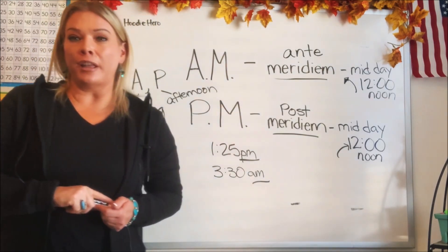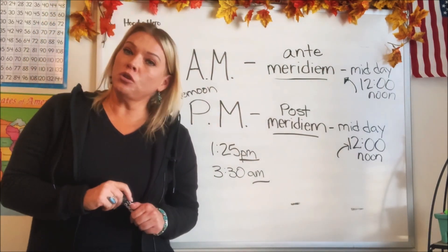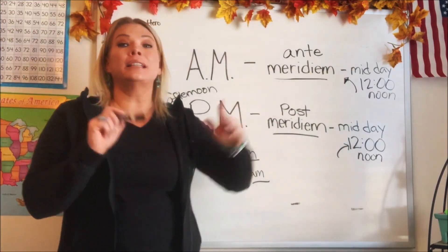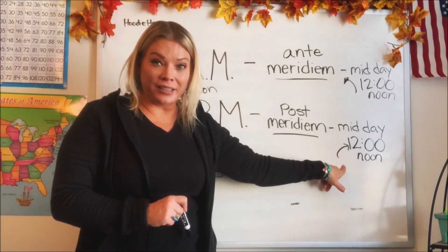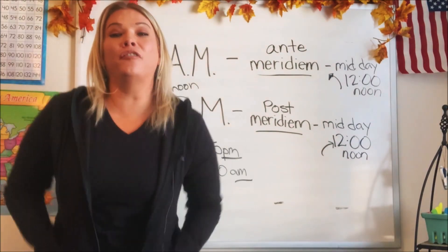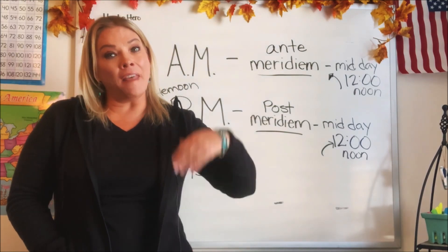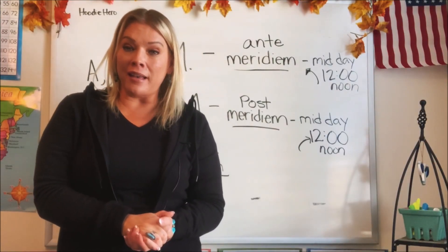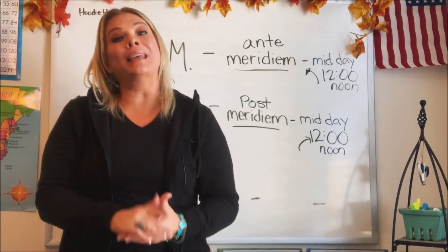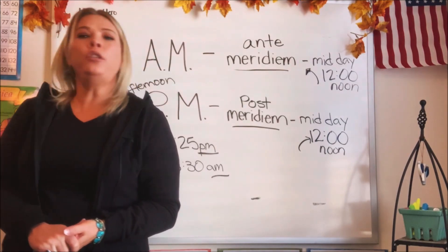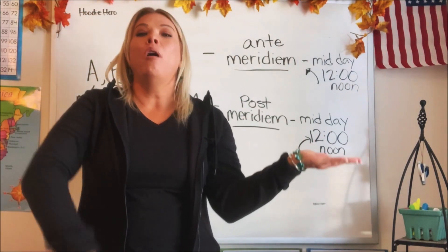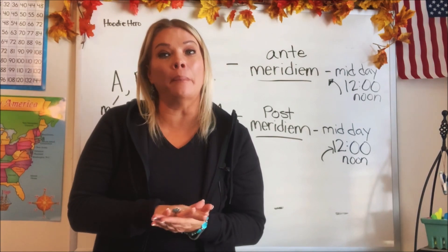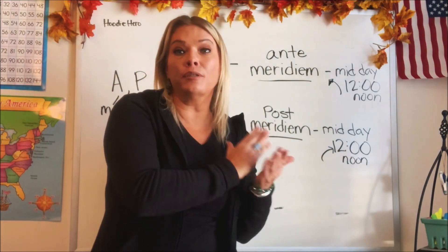Now I'm going to see if you guys have learned something. I'll give you some examples — let's see if you can say whether it's a.m. or p.m. Ready? Here is your first one: Do you go to bed in the a.m. or the p.m.? Good job — it's p.m.! You go to bed at night, which is the p.m. time. How about when do you eat breakfast? In the a.m. or the p.m.? You guys are doing awesome — it's a.m., because a.m. is before noon and comes first in the morning. You eat breakfast in the morning.